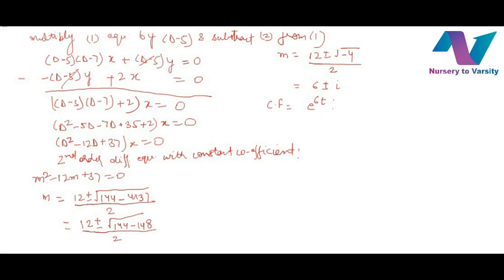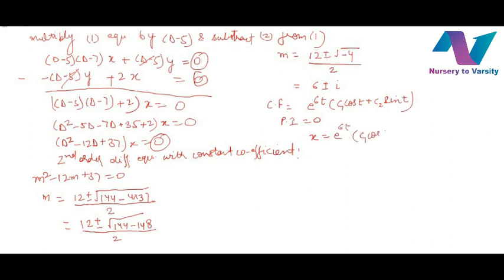Since D represents d/dt, t appears in the solution. The right-hand side is 0, so PI equals 0. Therefore x equals e^(6t) (c1 cos t + c2 sin t).